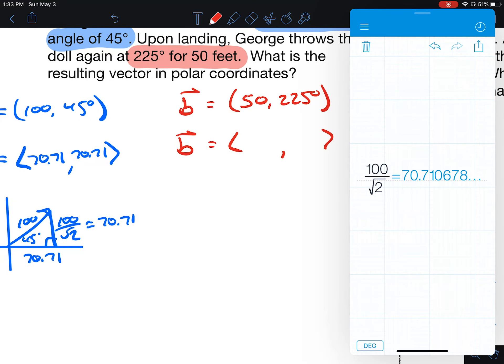Vector B, 225 degrees is in quadrant three. That's also a special right triangle, 45, 45, 90. So the legs are 50 divided by the square root of 2, and that is 35.36.